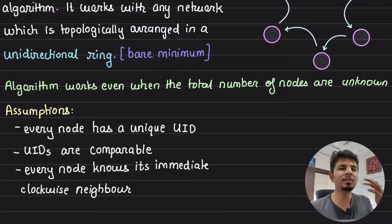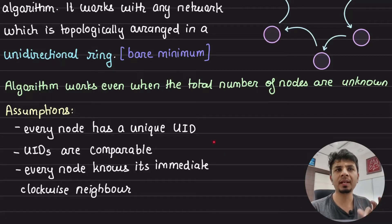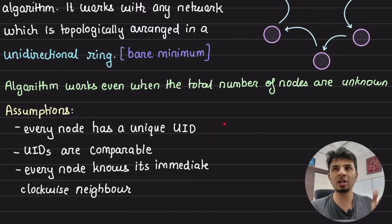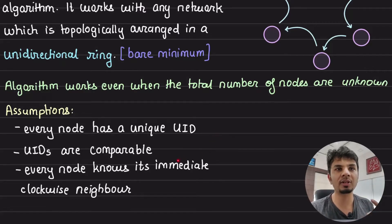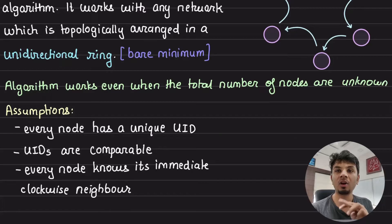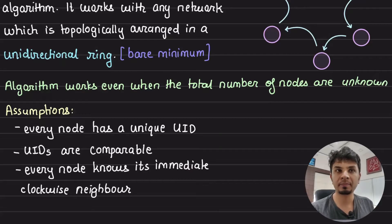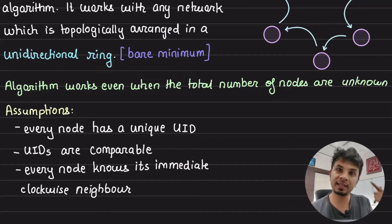There are a few assumptions we start with. First, every node has a unique UID — an integer or a bit string — and no two nodes can have the same ID, which is extremely important for this algorithm. Second, UIDs are comparable, meaning you can do less-than or greater-than comparisons on node UIDs. Third, every node knows its immediate clockwise neighbor. We don't need information about the total number of nodes.